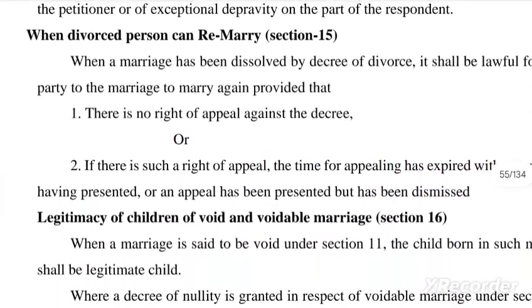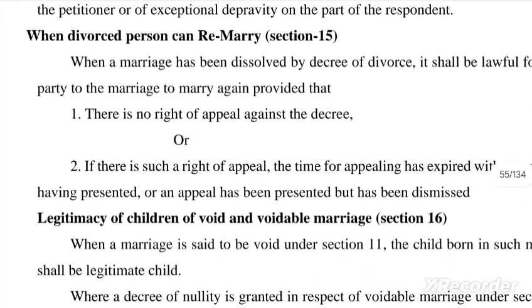Regarding when divorced persons can remarry — under section 15 — when a marriage has been dissolved by a decree of divorce, it shall be lawful for either party to marry again, provided there is no right of appeal against the decree. If there is a right of appeal, the time for appealing must have expired without an appeal having been presented, or an appeal has been presented but has been dismissed.